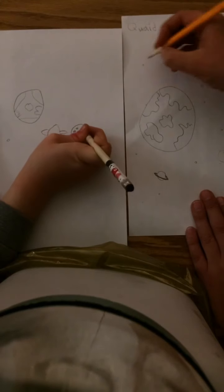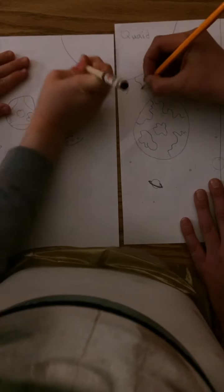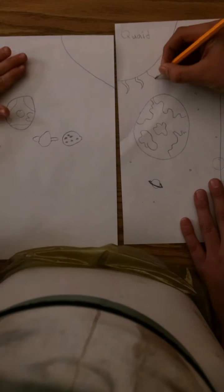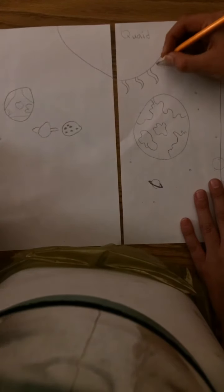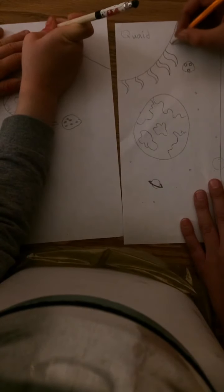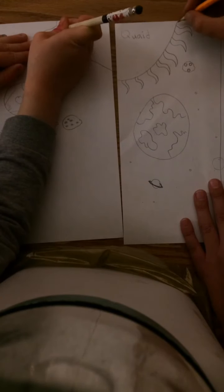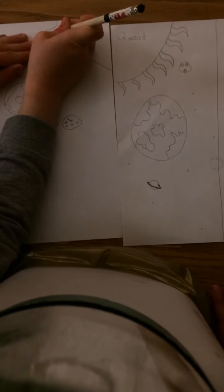And then you can do in the corner a ginormous sun in the background. Some little swirly lines. There we go.